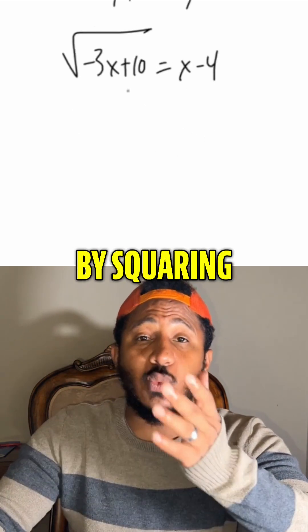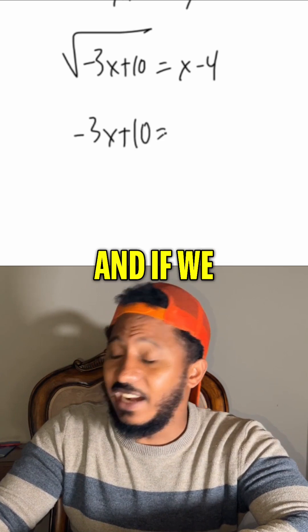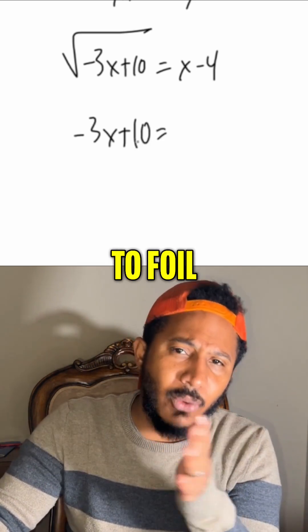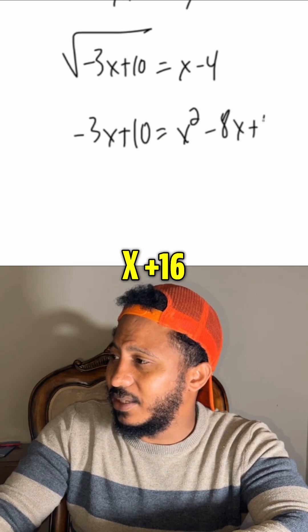Then get rid of that radical by squaring both sides. So that gives us negative 3x plus 10. And if we square the right-hand side, that means to foil it out. We end up getting x squared minus 8x plus 16.